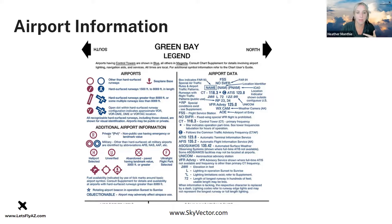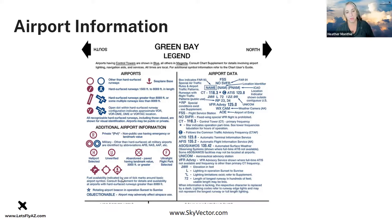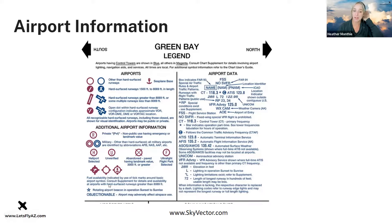You've also got a circle-R for private airports, double circles for military airports, helipads, unverified airports, abandoned airports, and ultralight parks. Ticks on the airport symbol indicate fuel is available, but you should consult the chart supplement because it may not be a 24-hour service. The star indicates a rotating airport beacon that operates sunset to sunrise. 'Objectionable' means that airport may adversely affect airspace use.